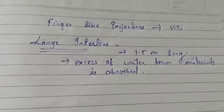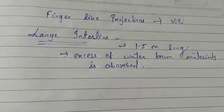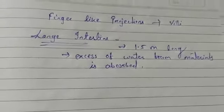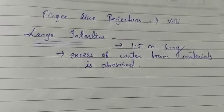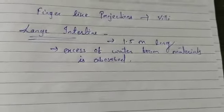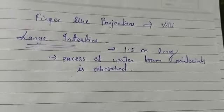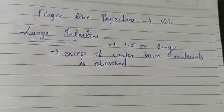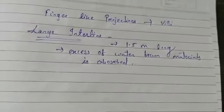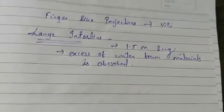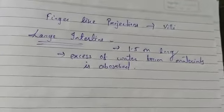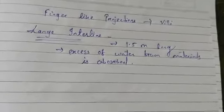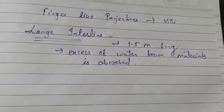The throwing out of waste from the digested food — the removal of waste material from the body — is called egestion. It is also known as defecation.